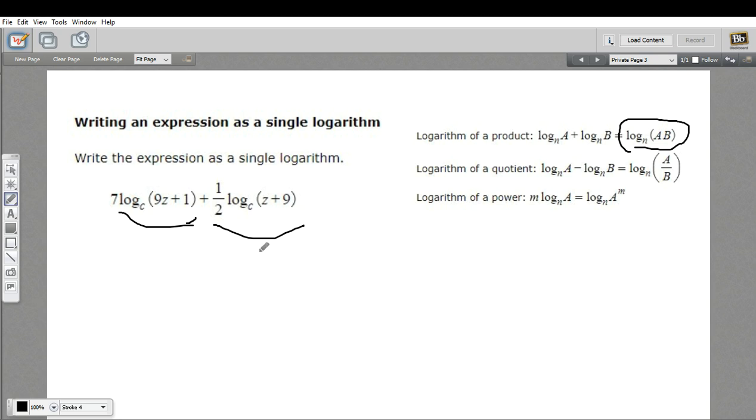There's a little bit of work we have to do before that, though, because we have this seven hanging out here and this one half hanging out here. So we want to deal with those. We can use the logarithm of a power property to deal with that. What that property says is if you have a number hanging out here, you can move it out here to be a power of this number here.